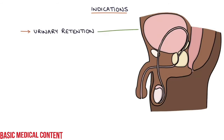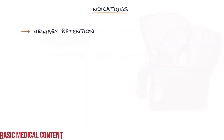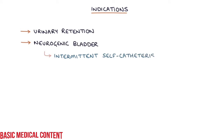Let's talk about the indications. The reasons for inserting a urinary catheter include urinary retention due to a lower urinary tract obstruction, for example an enlarged prostate gland, and neurogenic bladder — for example, intermittent self-catheterisation in patients with multiple sclerosis.